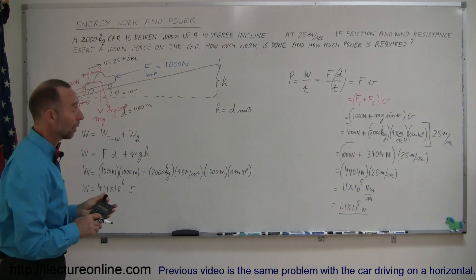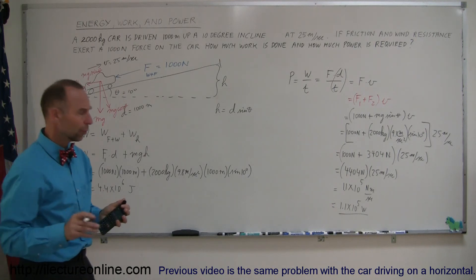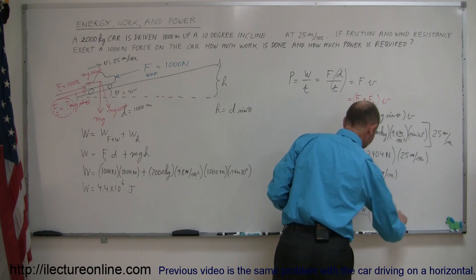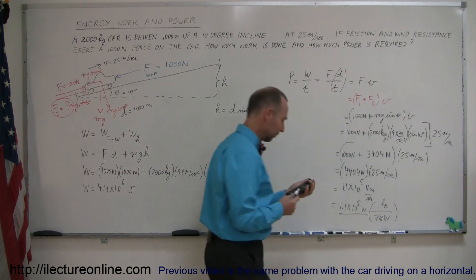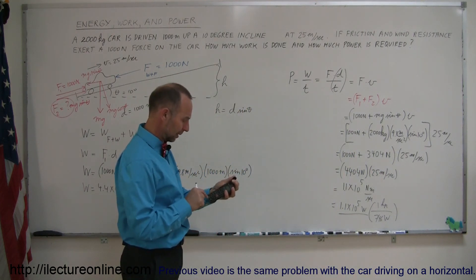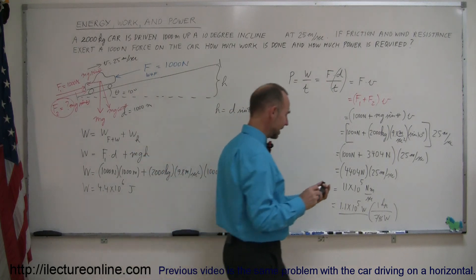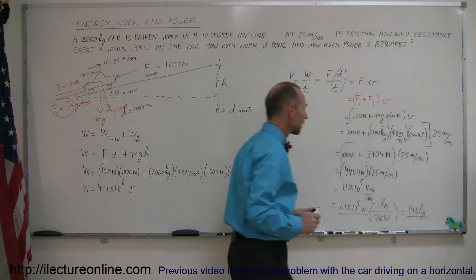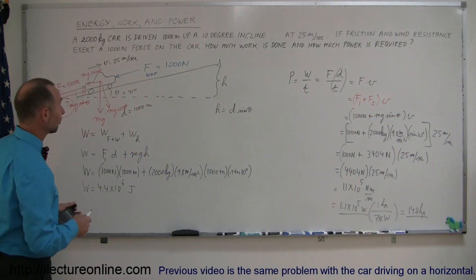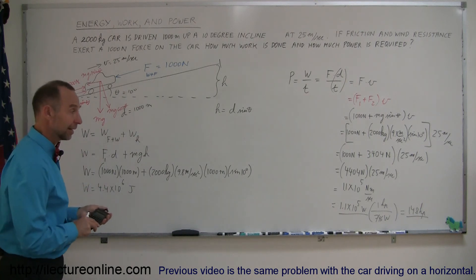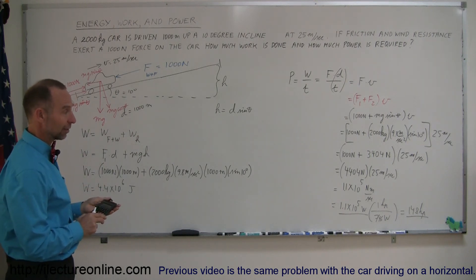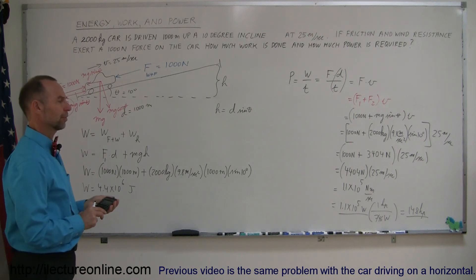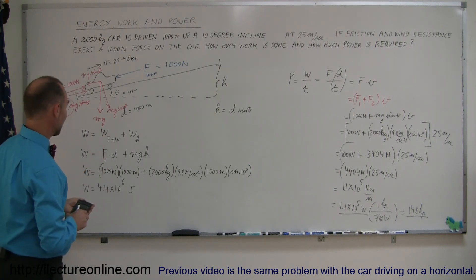Or 110,000 watts. Now, converting that to horsepower, you can multiply that times the conversion factor, 1 horsepower is equal to 746 watts. So, if we divide that by 746, equals 148 horsepower. So, for the car to drive up the incline at 25 meters per second, which is about 55 miles per hour, that car better have an engine that can deliver at least 148 horsepower. Which, by the way, my car doesn't do that. So, I couldn't drive up that incline at 55 miles per hour.